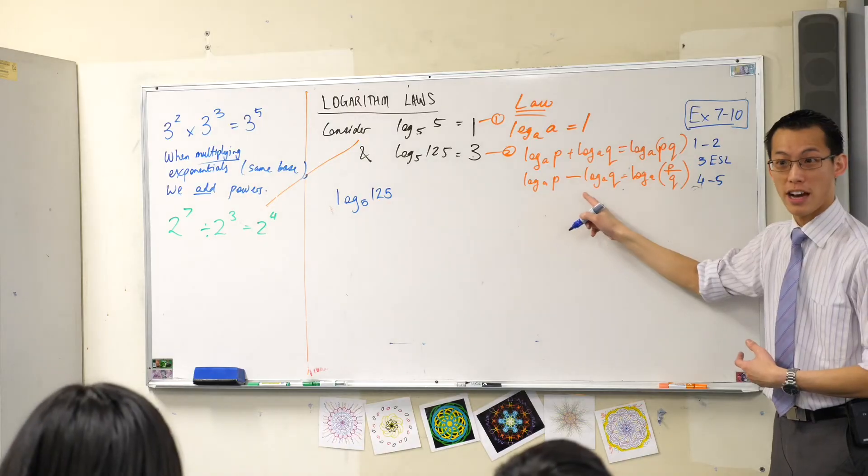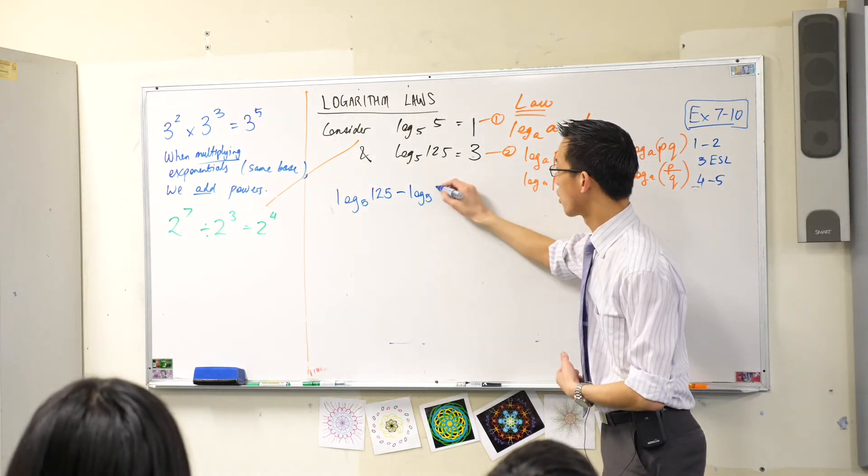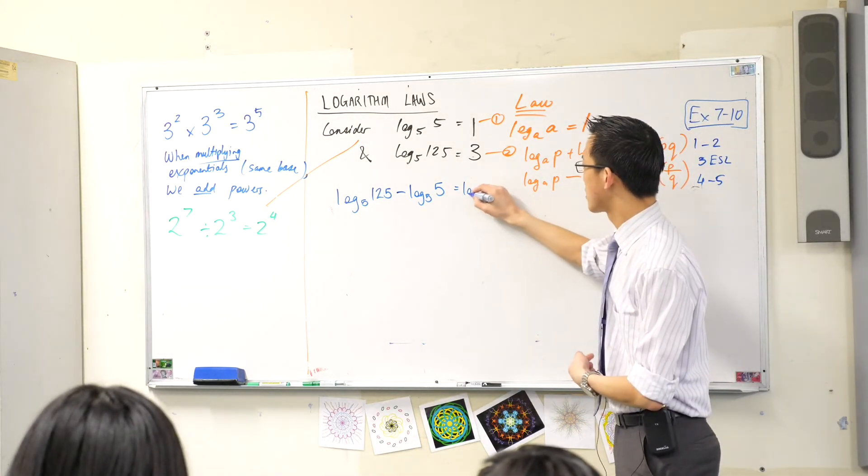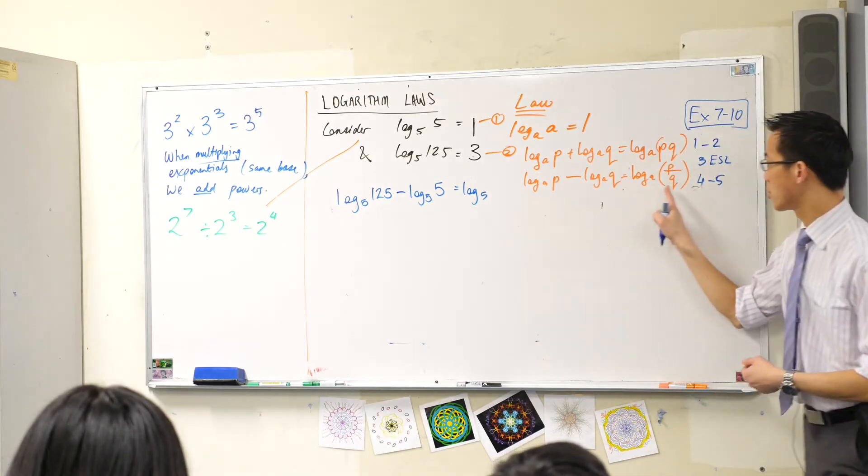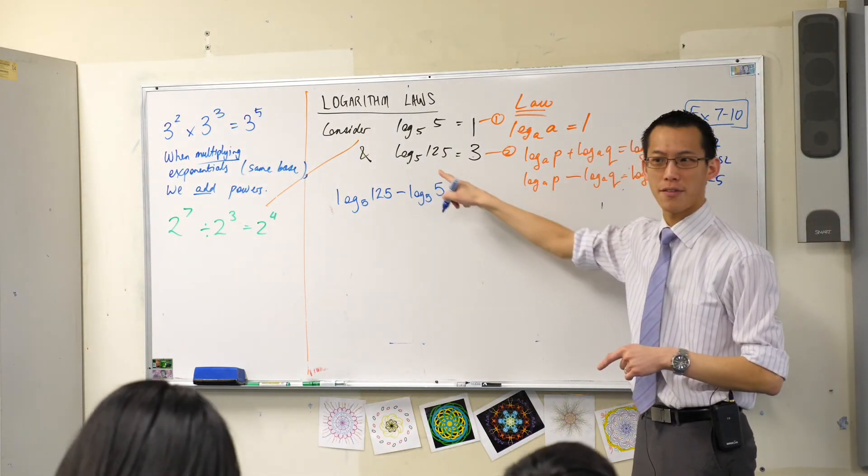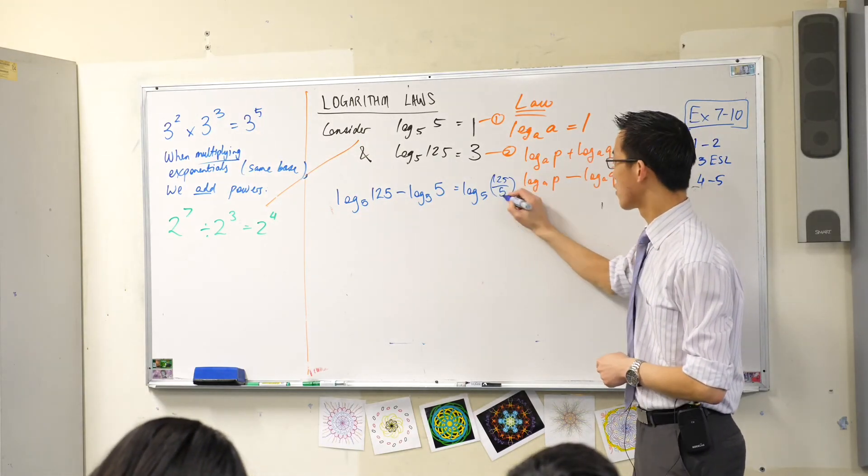We're thinking about subtraction, right? Log base 5 of 5. So in this case, what we expect is for this to be log base 5 of, what am I going to do to these numbers? Divide. So 125 divided by 5, that's 25, right?